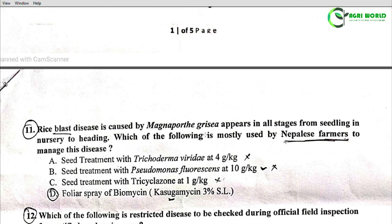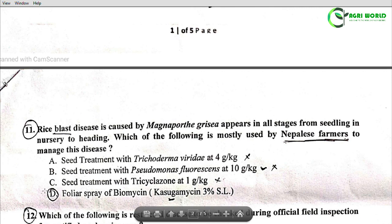Question 11: Rice blast disease is caused by Magnaporthe and appears in all stages from seedling in nursery to heading. Which of the following is mostly used by Nepalese farmers to manage this disease? Options: A - Seed treatment with Trichoderma viride at 4g/kg; B - Seed treatment with Pseudomonas fluorescens at 10g/kg; C - Seed treatment with tricyclozole at 1g/kg; D - Foliar spray of Biomycin/Kasugamycin 3% SL. Option D is the correct answer.